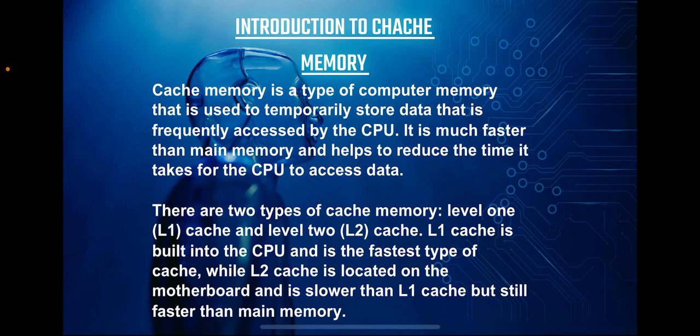Cache memory can be categorized into two types: Level 1 (L1) cache and Level 2 (L2) cache. L1 cache, often referred to as primary cache, is built directly into the CPU. This placement allows for lightning-fast access to frequently used data. It's like having a small but incredibly swift storage space right next to the processor, ready to serve up information at a moment's notice.